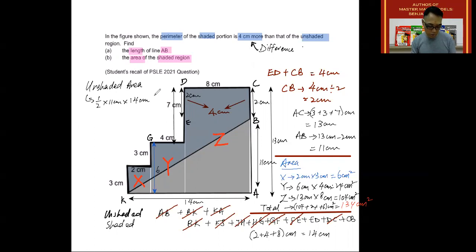I'm just going to do that. So half times 11 times 14. And that gives me 77 centimeters square. 77 square centimeters.